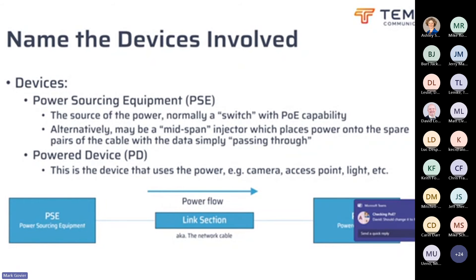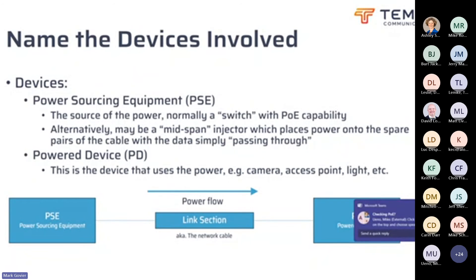Looking at those devices again, at one end — perhaps at the switch, or somewhere where the circuit is originating — we have what we call the power sourcing equipment. At the far end we have a powered device, and in between we have what is known as the link section. To us, it's called the CAT5 cable and the RJ45 plugs on the ends. The link section is the physical media over which the Ethernet is carried — in our case, the copper pairs.